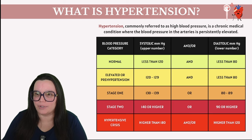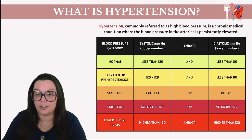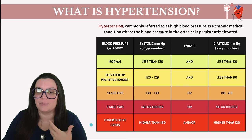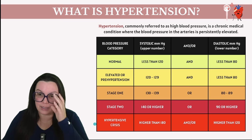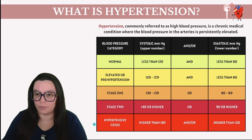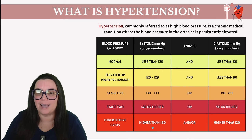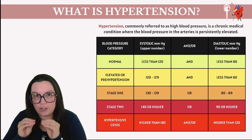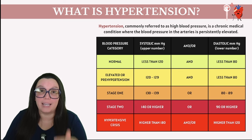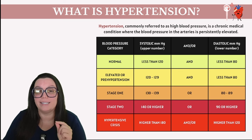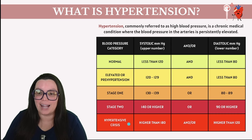If we escalate to stage two hypertension, this is where concern starts to grow. We're seeing a systolic pressure of 140 or higher, or a diastolic pressure that's 90 or higher. Now if we have somebody experience hypertensive crisis, this is really serious — the risk of damage to their body rapidly increases. We can see a systolic pressure higher than 180 and/or a diastolic blood pressure greater than 120. Our main goal as healthcare professionals is to address the blood pressure immediately to get it to come down, because we're going to start to see organ damage occur very rapidly.